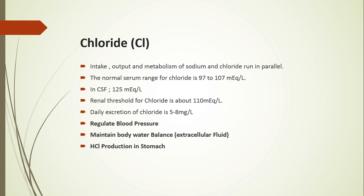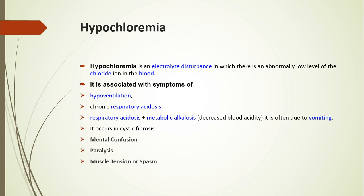Chloride metabolism runs in parallel to the intake and output of sodium. The normal range of chloride is 97 to 107 milligrams per liter, and daily excretion is 5 to 8 milligrams per liter. Chloride mainly regulates blood pressure, maintains body water balance, and causes the production of HCl in the stomach. Hypochloremia is a low level of chloride in the blood.